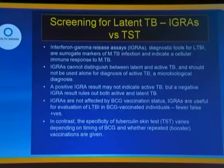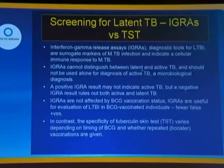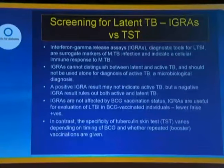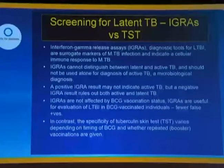Screening for latent TB is still under investigation, but interferon gamma release assays (IGRAs) as diagnostic tools look very useful. However, they cannot distinguish between latent and active TB, so a positive IGRA still requires another test to exclude active TB. Importantly, a negative result does rule out both active and latent TB — very useful. Also, these tests are not affected by BCG vaccination status, unlike the tuberculin skin test, which is also potentially very useful.